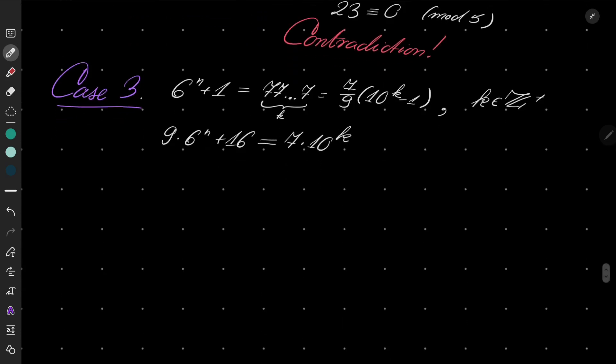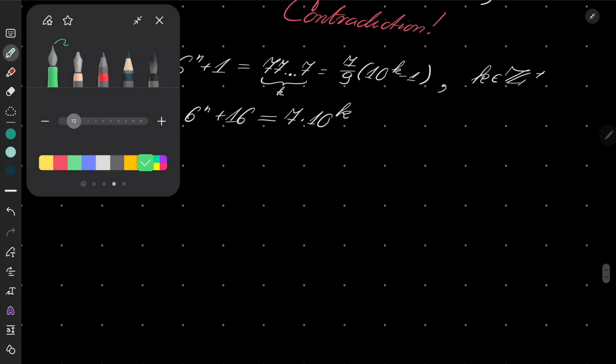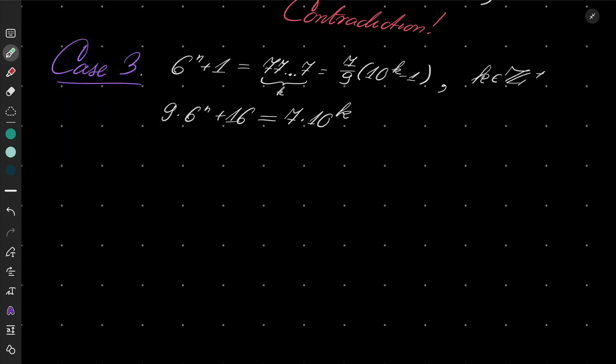9 times 6 to the power of n plus 16 equals 7 times 10 to the power of k. Okay, and now I wish to consider a few cases separately. Namely, first I will consider cases from 1 to 5. If n equals 1, notice the following: 6 to the power of n plus 1 is 7, so it has only digits 7; all the digits of it are the same.